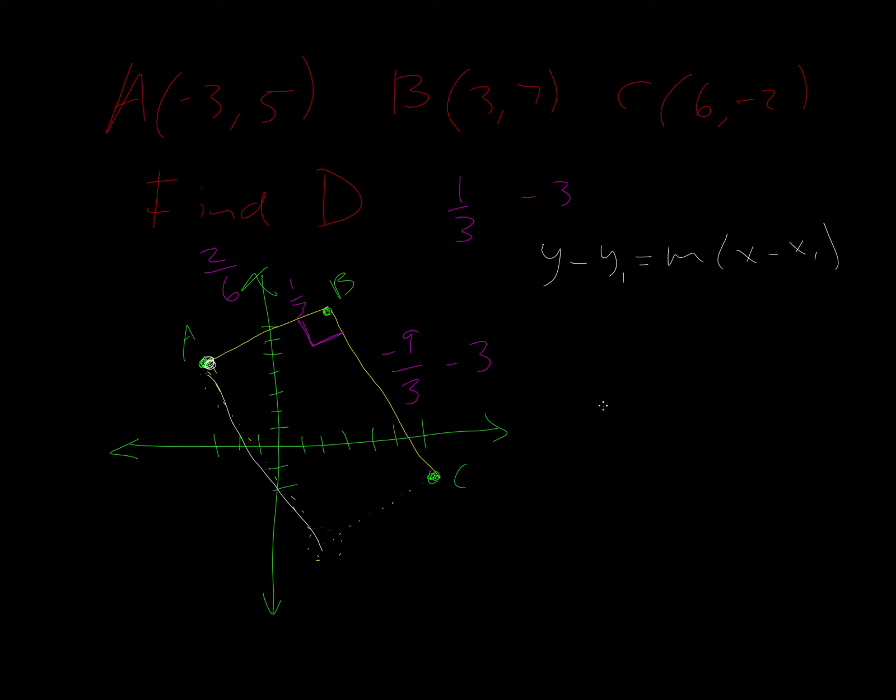So this white one will be, we want it to go through A, so we're going to say Y minus the Y value of A, so five, equal to the slope. Now, we want the slope to be the same as this line, and the slope is negative three. And then we're just going to say X and we subtract the X value. So in this case we're going to say plus three, because minus minus would be plus.